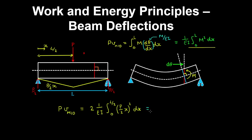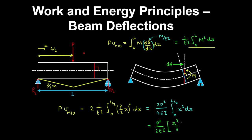Now we can take the constants outside the integral, giving 2P squared on 4EI by the integral of x squared dx from 0 to L on 2. Evaluating this integral, we get P squared on 2EI by x cubed on 3, evaluated from 0 to L on 2.